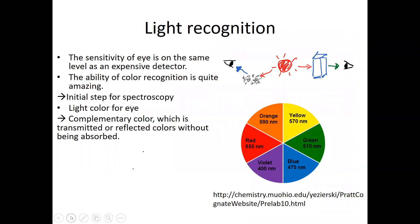Okay, then the last part of this lecture one is light recognition. I want you to keep in mind that we have a sensor of light. And this sensor actually has a very high sensitivity. Of course, I'm talking about eye. The sensitivity of eye is still quite good, compared with a very sophisticated high sensitivity detector.